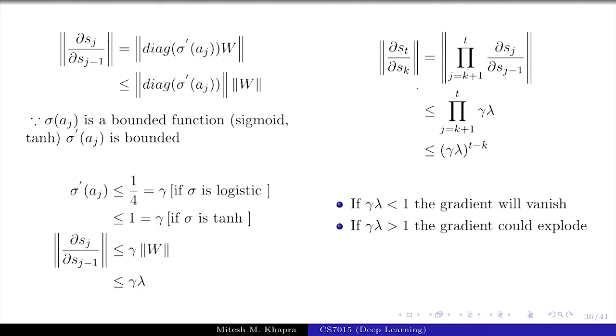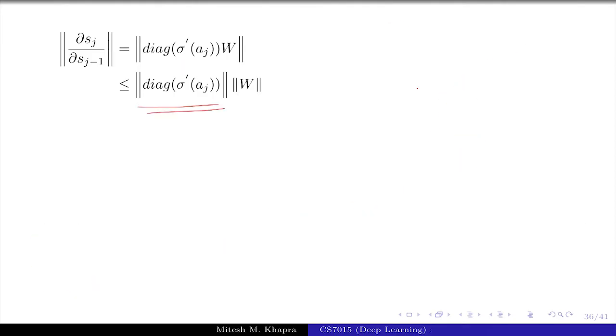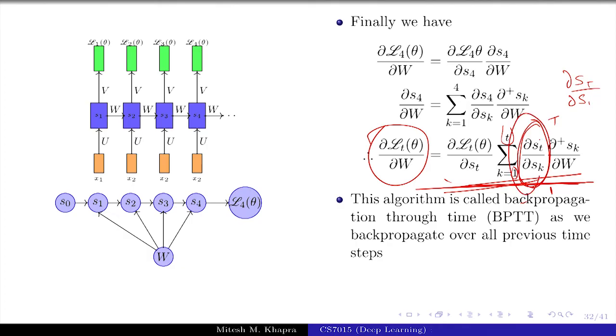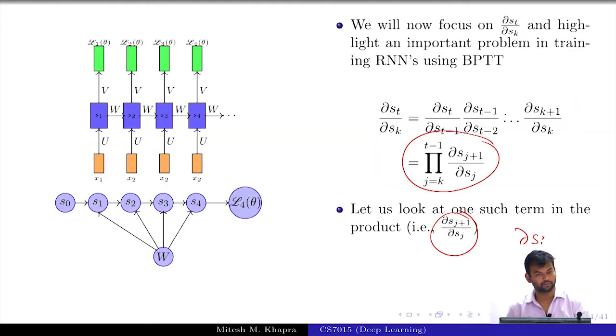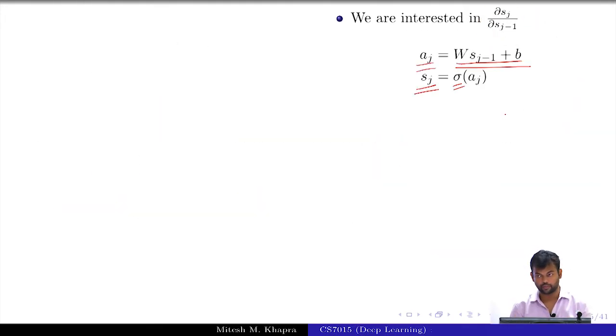But why? What? If this vanishes, what vanishes? Let us go back. So, I have shown you that this quantity could vanish. If this vanishes, the entire gradient could vanish and if the gradient vanishes, what would happen? No updates and you are just stuck where you are.